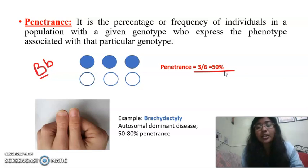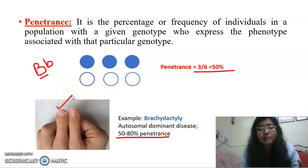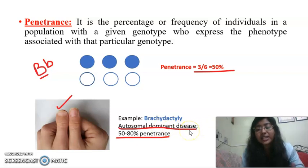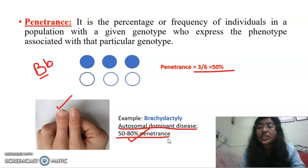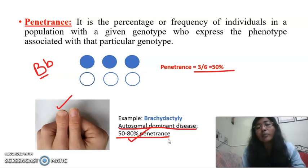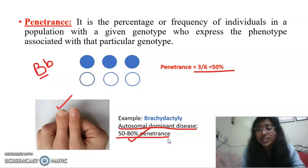A good example in humans is brachydactyly, which is an autosomal dominant disease, but its penetrance level is only 50 to 80%. In brachydactyly, you can see some kind of malformed short fingers in human beings. As it is an autosomal dominant disease, a single copy of the dominant allele can show the disease. But as it is only 50 to 80% penetrant — not 100% penetrant — though you have the dominant allele, you may not show the disease. If it were 100% penetrant, then if you have the dominant allele, you would definitely show the disease.